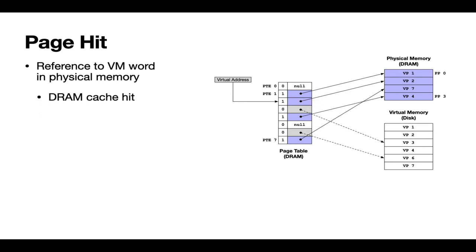One final thing to note: the locations of virtual pages in RAM are not constrained at all. When we said we can store any virtual page in any physical page, that's what we mean. Although the page table itself is in a fixed location in memory, each of its entries could point to arbitrary locations throughout main memory, allowing virtual pages to be brought into physical memory in any place we want. This gives the page replacement algorithm quite a lot of flexibility in how it manages main memory.